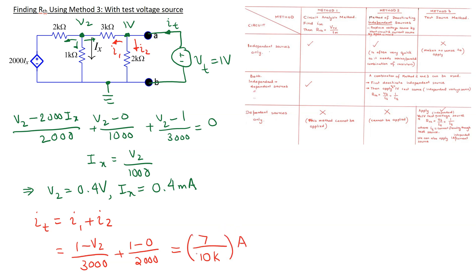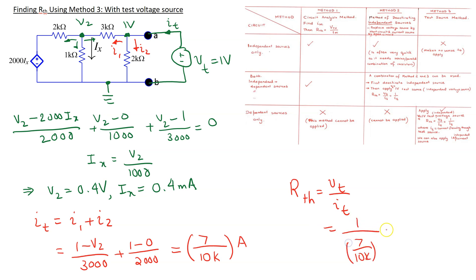Now once we find IT we can find R-Thevenin. R-Thevenin is Vt over IT. So this gives the value 1 over (7/10k), which is 10 over 7 kilo-ohms. So this is the value of the Thevenin equivalent resistance.